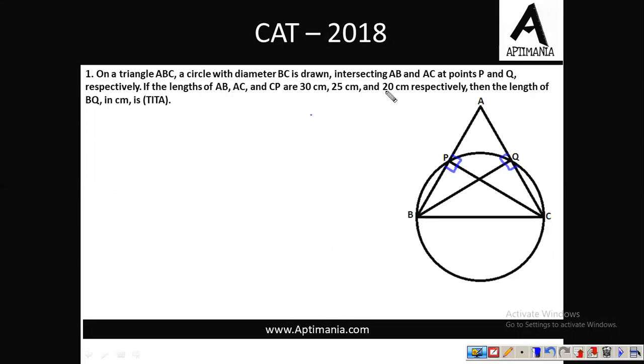What is given to us, if the length AB, AC and CP are 30, 25 and 20. So this AB is 30 centimeter, this AC will be 25 centimeter and this CP will be 20 centimeter. I have to find the length of BQ.